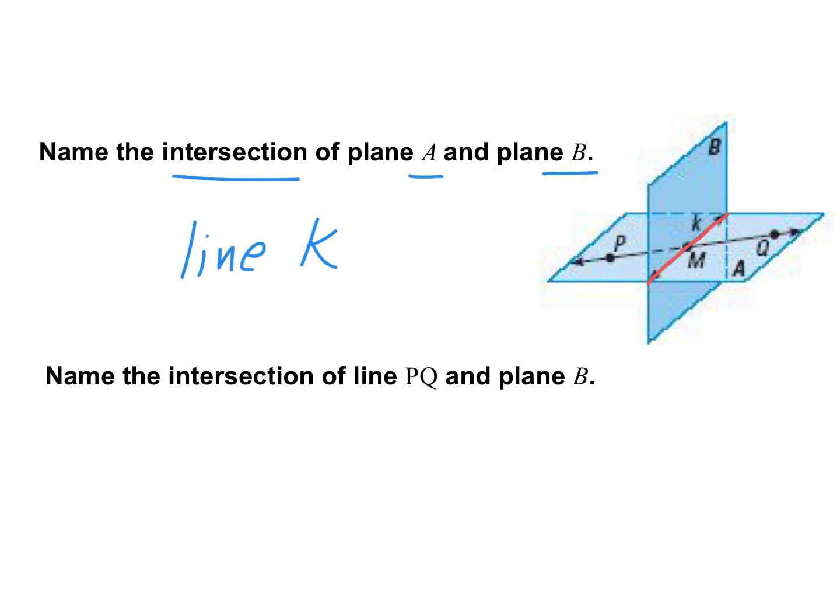That is the intersection of those two planes. Next we have, name the intersection of line PQ and plane B. So plane B is the darker plane. See how there's a B here? That's the name of this plane. Plane B is the darker one. And we're trying to figure out where does it intersect. Let's take this piece off. Where does plane B intersect line PQ? So PQ is going like this horizontally. Where does this intersect this other plane?